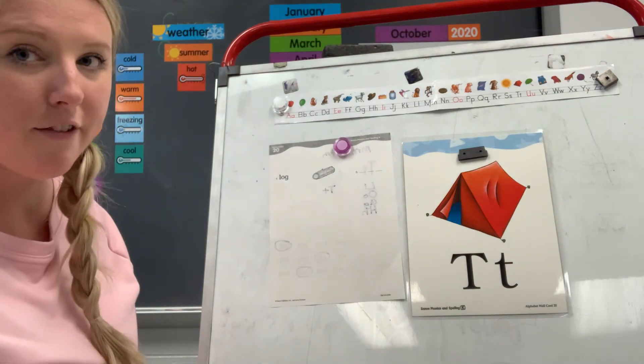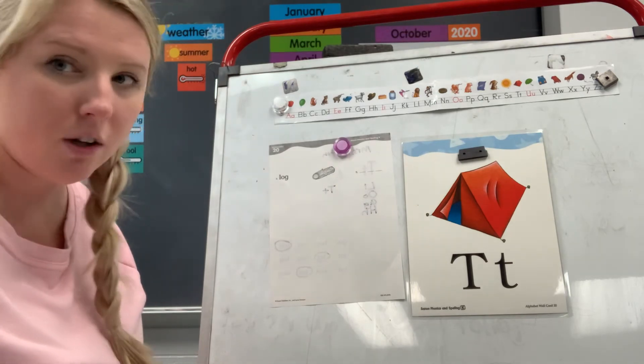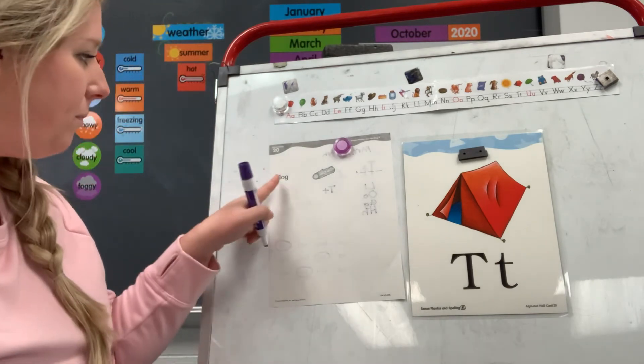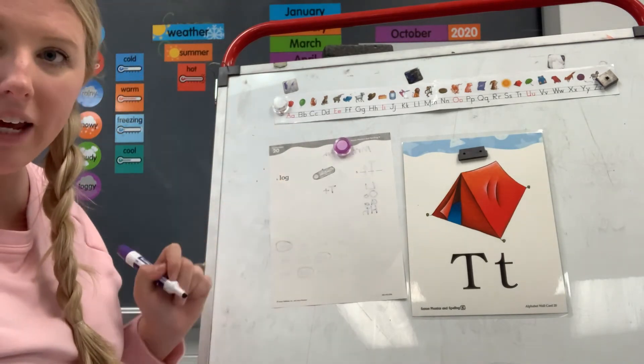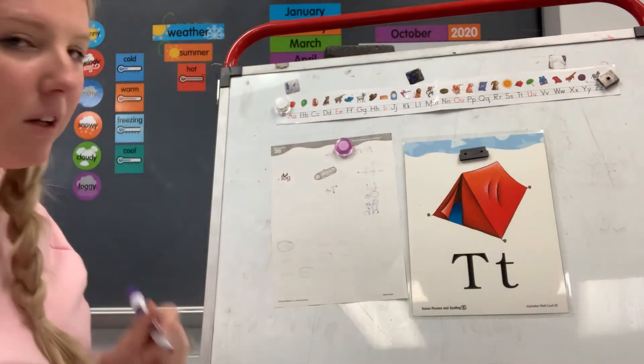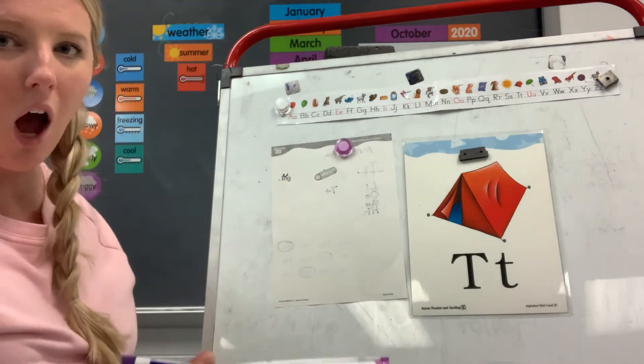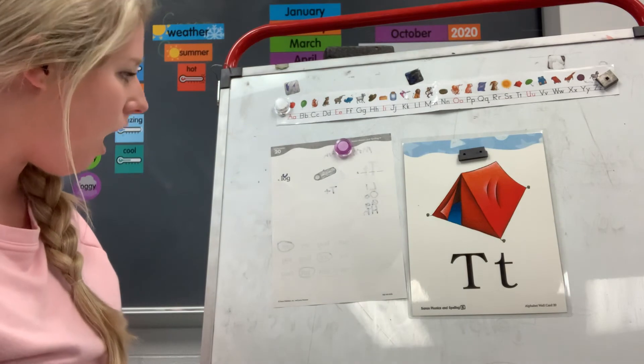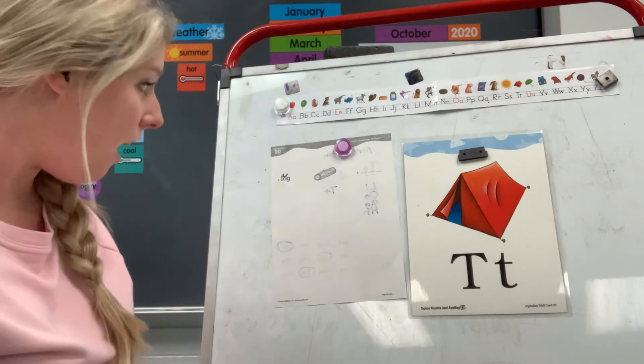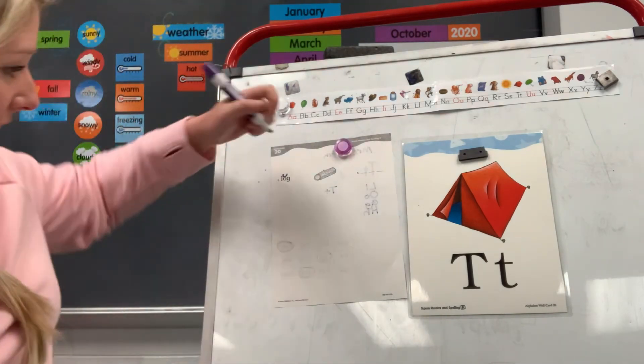Which letter is the vowel? L-O-G, which letter is the vowel? O, you're right. Put your finger under the vowel. How are you going to code it? What's that funny word? A breve, you're right. Why am I coding it with the breve? L-O-G, what's that word? Log. Do you see a picture of a log? Oh, draw a line from the word to the picture. Good job.